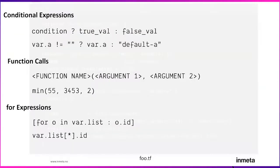You can also write conditional expressions — for example, if var.a is an empty string, the result is 'default_a'; otherwise it is the actual value of var.a. You can also do function calls, such as the 'min' function which takes a number of arguments and returns the numerically smallest. For expressions or looping, if var.list is a list of objects with an attribute 'id', a list of the ids can be produced with a for expression — just like other programming languages: conditionals, function calls, and for loops.